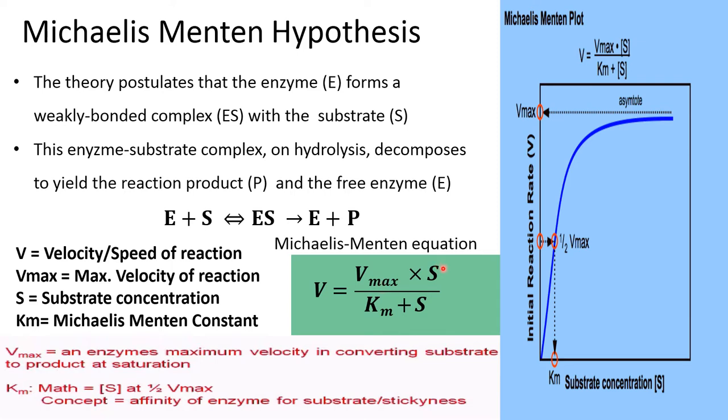S is the substrate concentration, and KM is the Michaelis-Menten constant which represents the substrate concentration at half the Vmax.